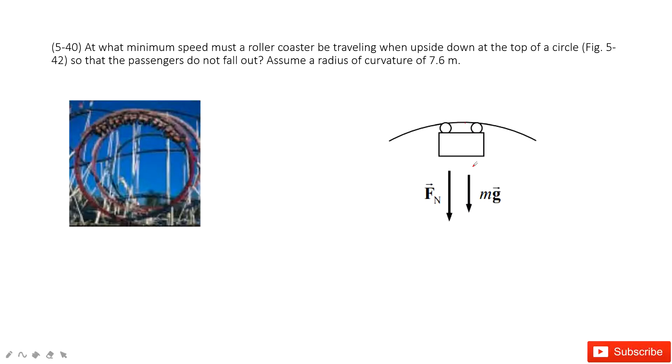In this case, we need to find the centripetal force. The normal force plus the gravity equals mass times the centripetal acceleration, v squared divided by r.